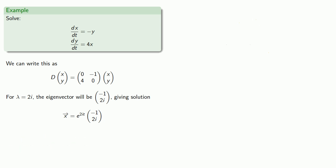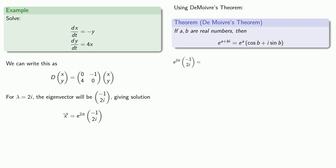Now, we do need to split this into the real and complex portions of the functions, so we'll use De Moivre's theorem. e to power 2i t times our vector is going to be our vector times cosine 2t plus i sine 2t.